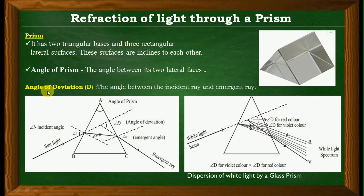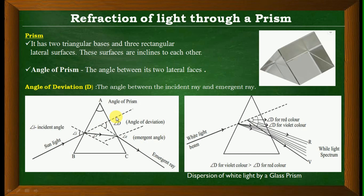There is something called angle of deviation. The angle of deviation is the angle between the incident ray and the emergent ray. When light hits the point of incidence, refraction occurs. It passes through the prism and comes out again, producing deviations at both surfaces. The angle between the incident ray and the emergent ray, when extended to meet, gives the angle of deviation.